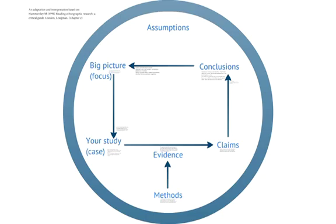So here we go. We keep clear about our assumptions, and then we go from the bigger picture or focus to your study or the case. We think about the methods we use to generate relevant evidence to make claims. When we assess people's claims, we do not take their evidence for granted, and we have to think about the methods that underpinned them and their process of analysis that led them to particular claims. Claims refer to the case that was studied; conclusions refer to that bigger picture or focus. The horizontal line between your study and the claims is really important, with evidence at the centre. The vertical lines between the bigger picture and your study, and the claims and the conclusions, are really important in managing how your study has something to say of broader significance.